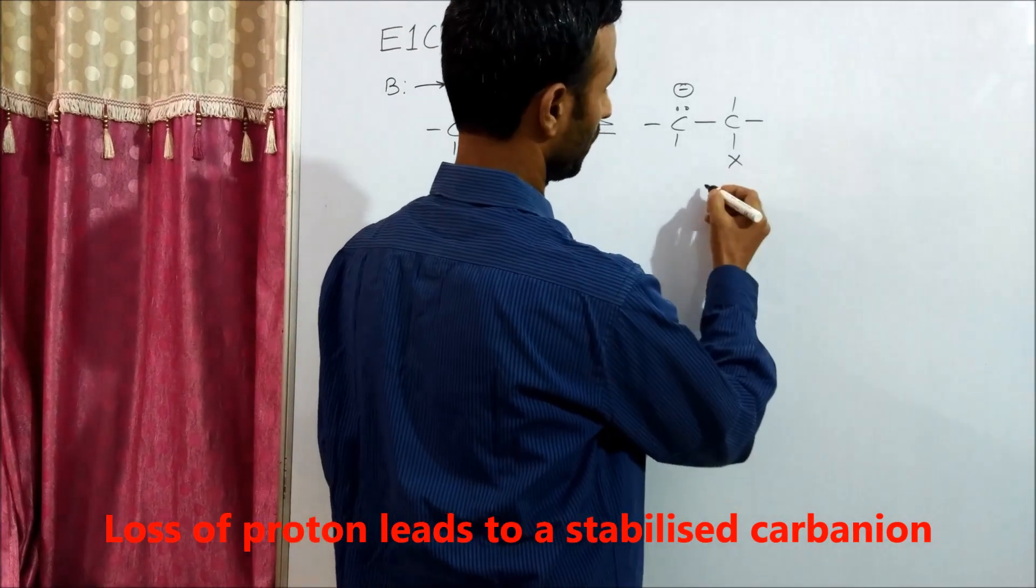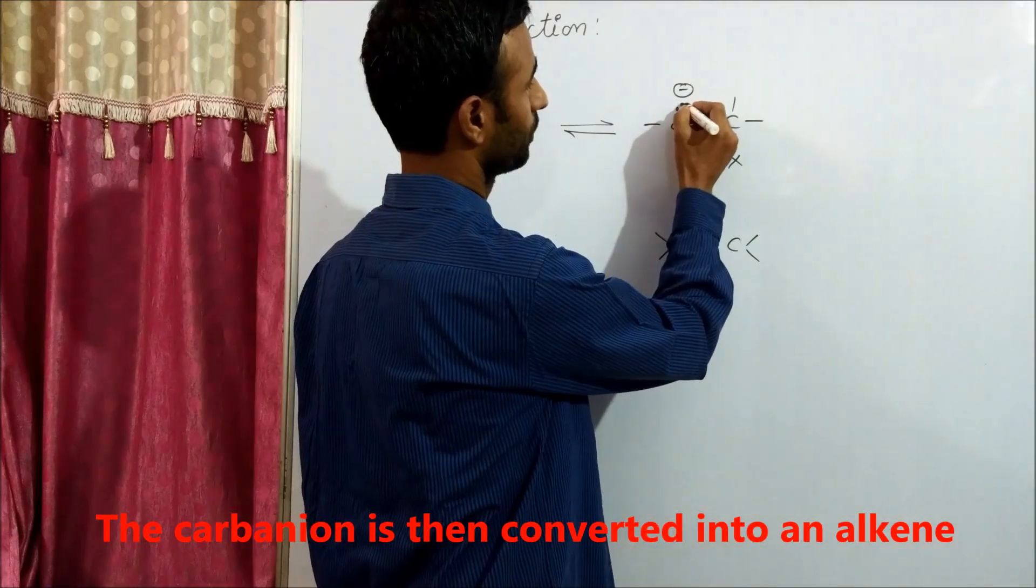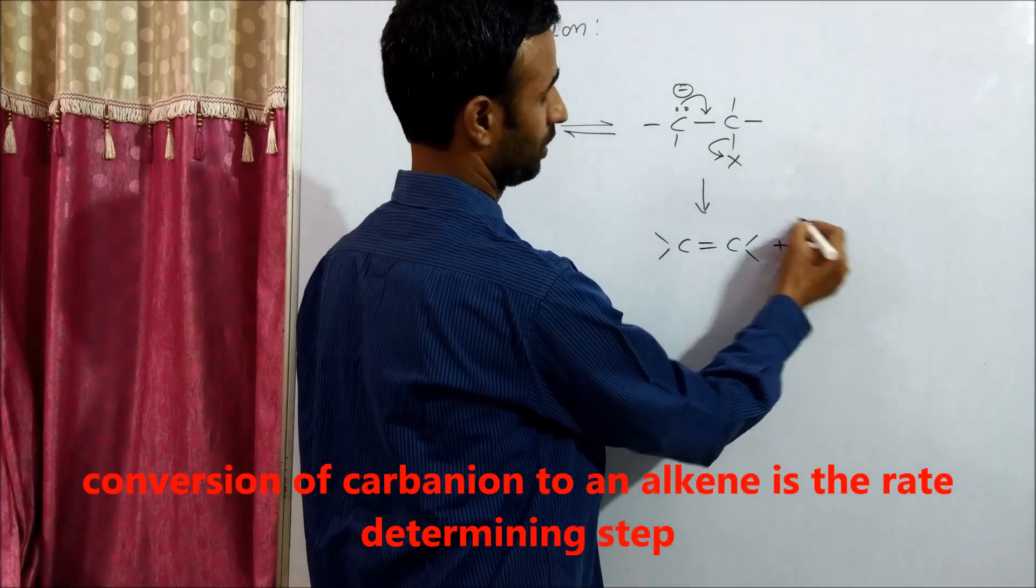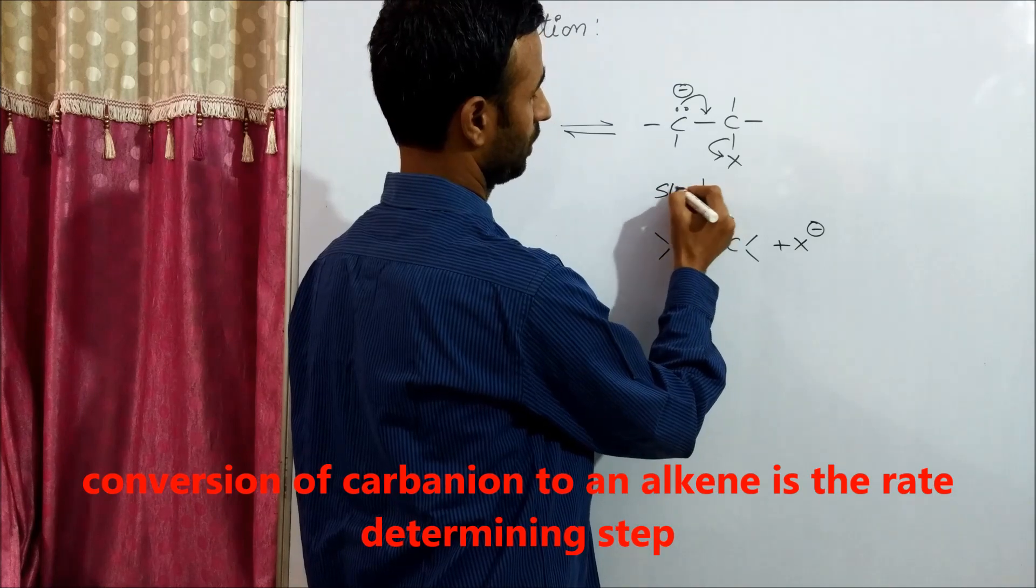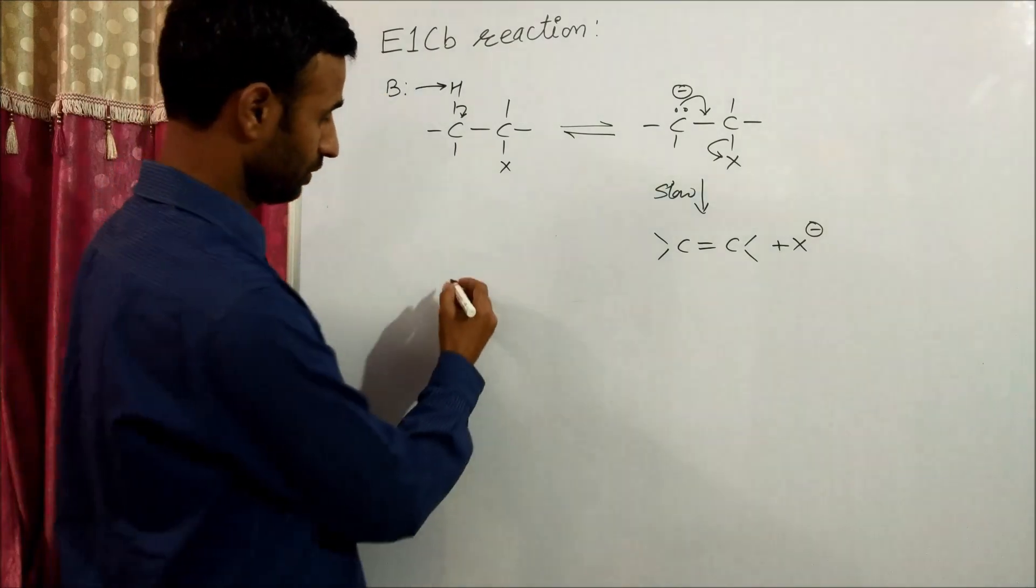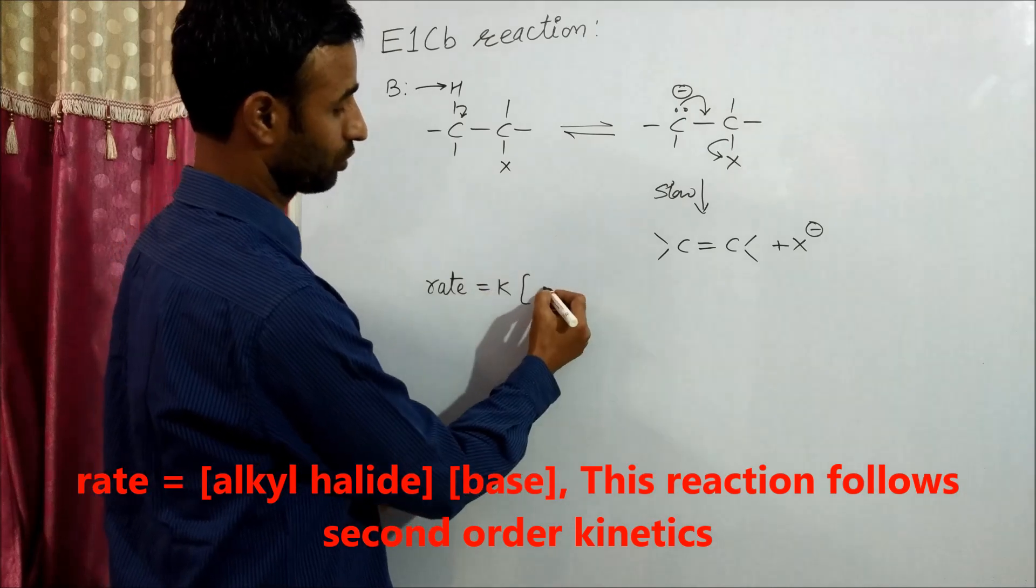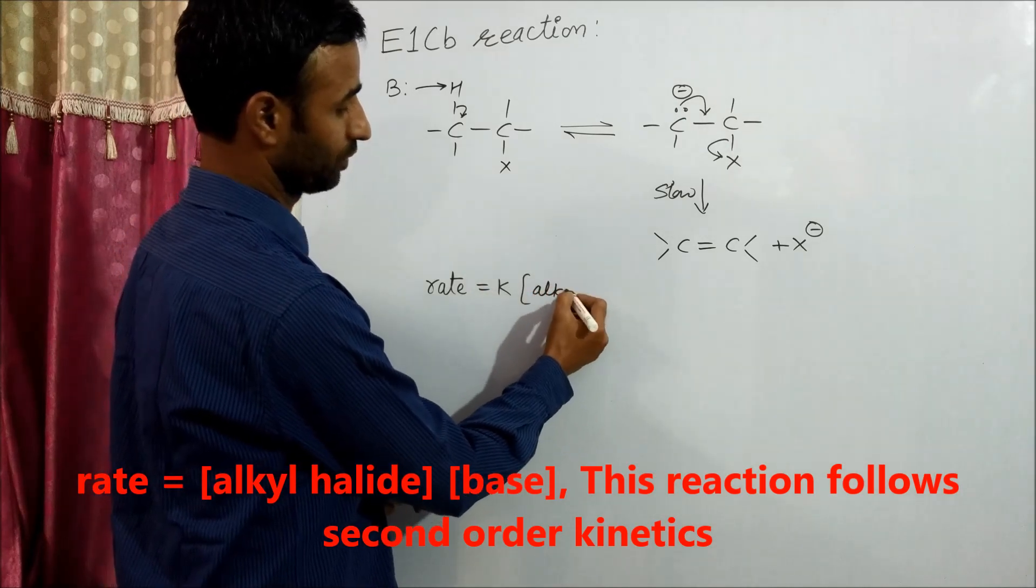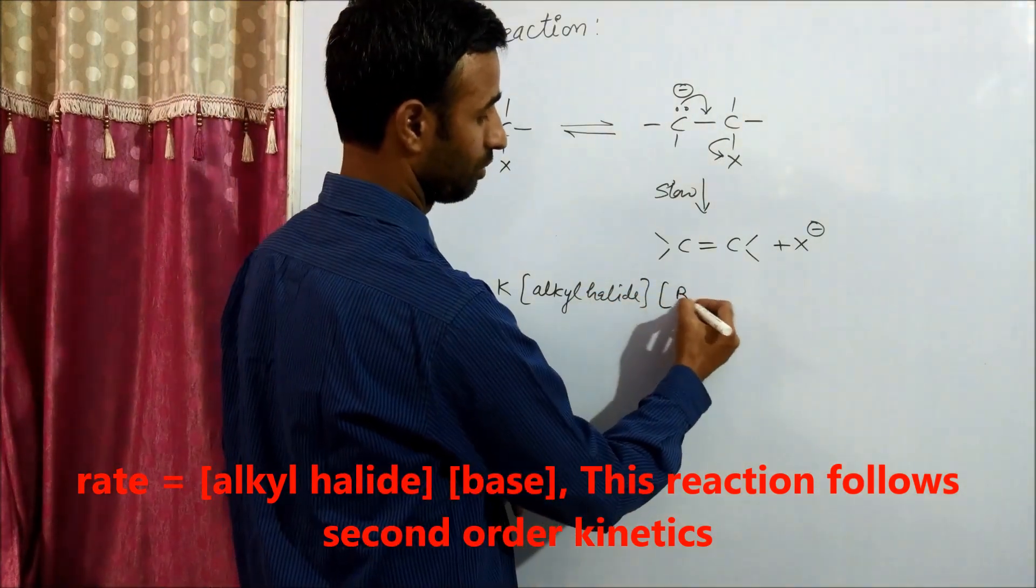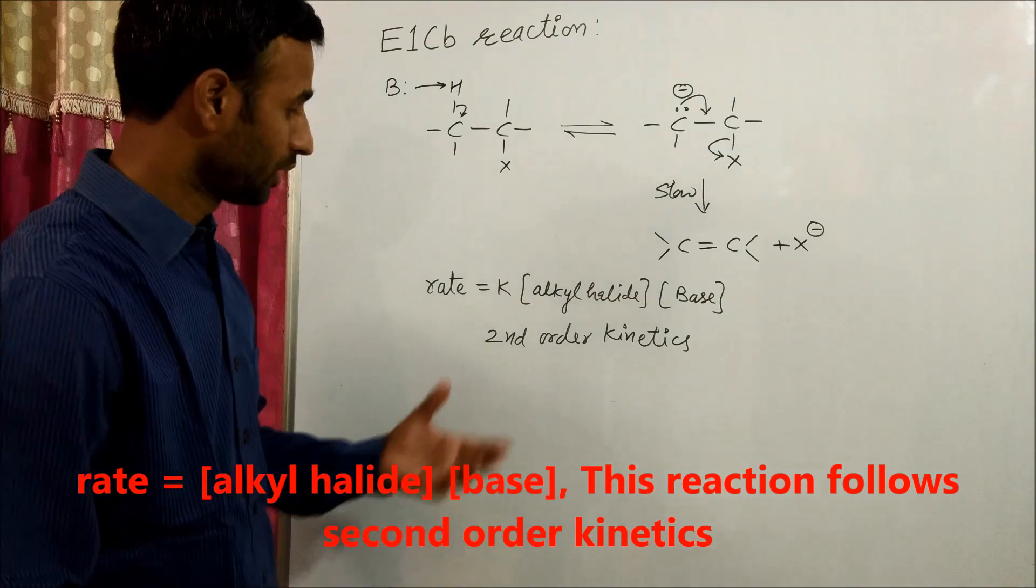...then leads to alkene formation. This is the slow step. If we talk about kinetics of this reaction, the rate is proportional to both alkyl halide and base, so it follows second order kinetics.